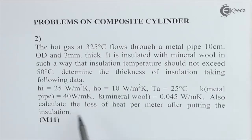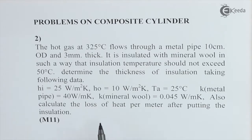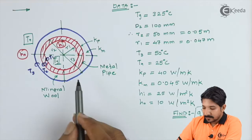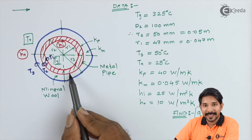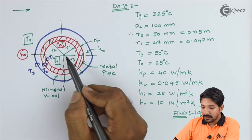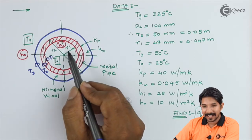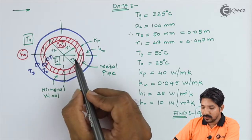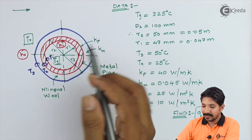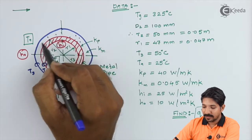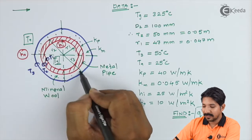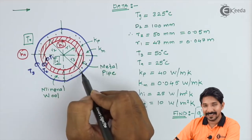They also ask us to calculate the loss of heat per meter after putting the insulation — that is, Q' is what they are asking us to find out. In the schematic diagram, the red color represents the pipe. The inside radius is r1, the outside radius is r2, and then there is insulation shown by the dotted line, with insulation radius r3.